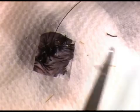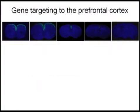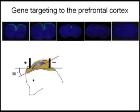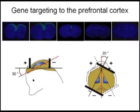The animal was allowed to continue with the development of embryos. For selective gene targeting in the prefrontal cortex, depending on which hemisphere was injected, the electrodes were roughly oriented at a 30-degree angle downward from an imaginary line from the olfactory bulbs to the caudal side of the cortical hemisphere, and at a 20-degree outward angle from the midline.